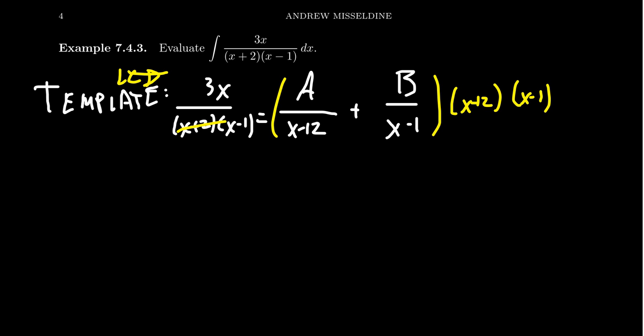On the right-hand side, when you distribute this onto the B and to the A, the x+2 will cancel with the first one, leaving you an x-1. And the x-1 will cancel on the second one, leaving you an x+2.